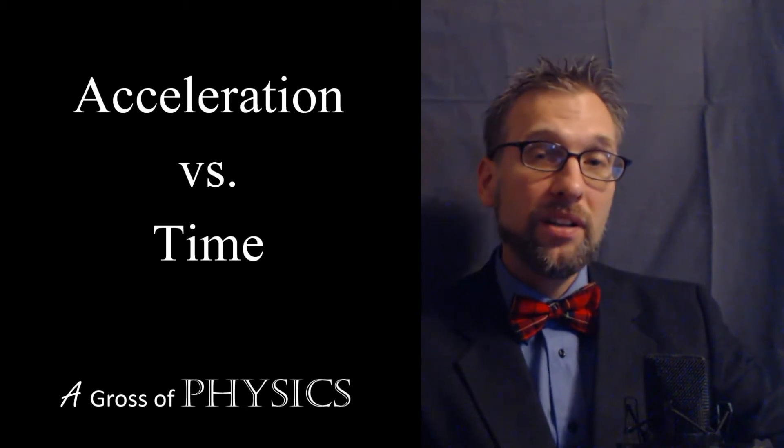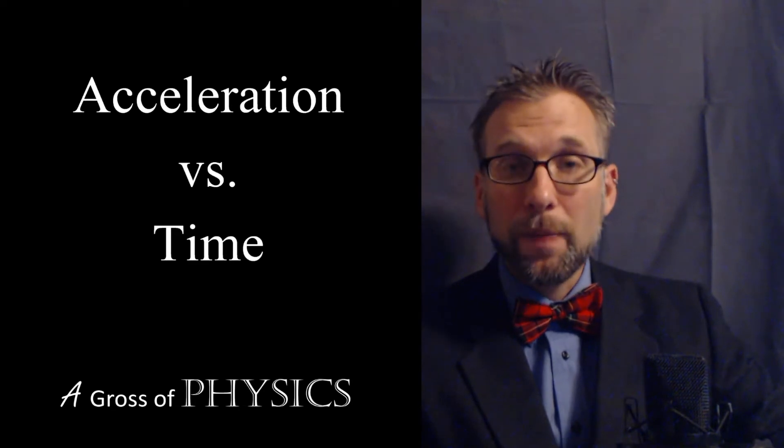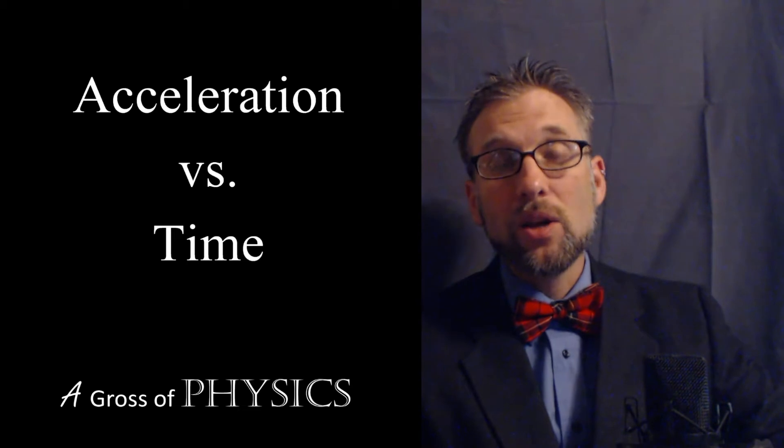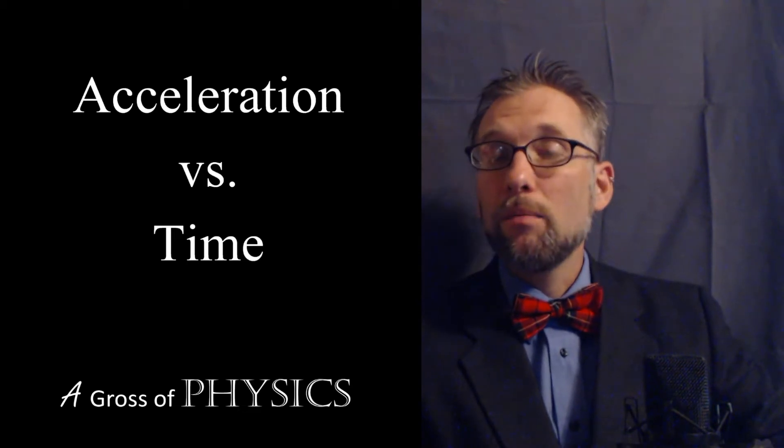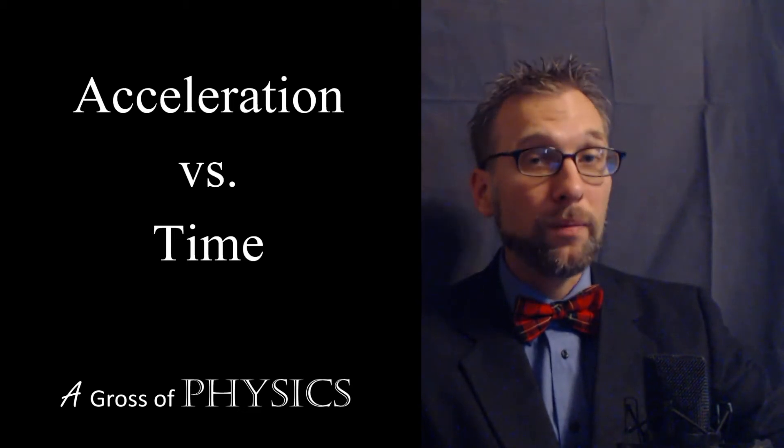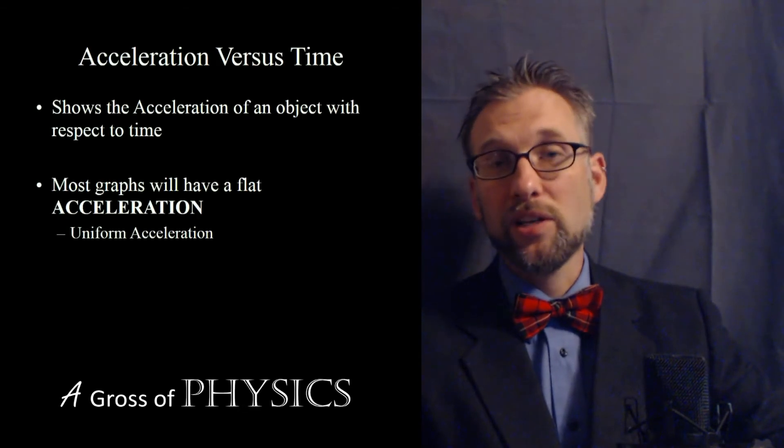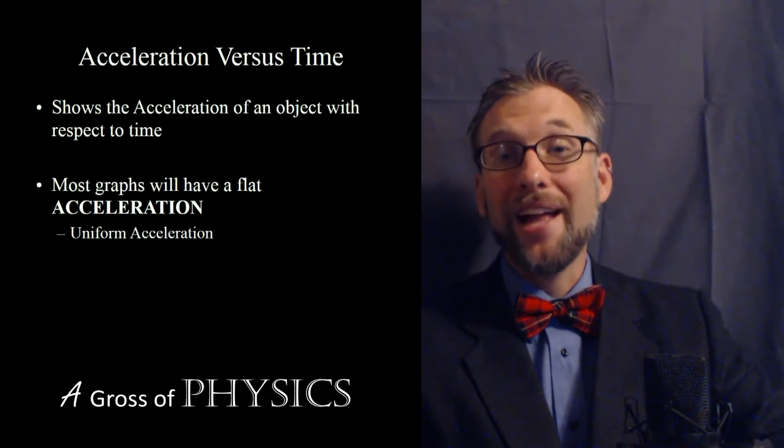Ninety-nine percent of the time it's going to represent zero or a value that is constant because most of our accelerations are uniform. Well uniform means they're constant. So what is almost every graph going to look like for acceleration versus time? You got it. It's going to be a flat line.